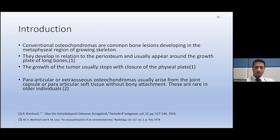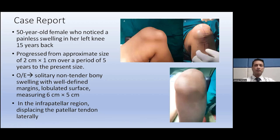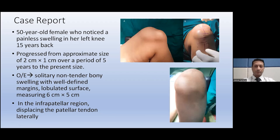I'm presenting a case of a 50-year-old lady who noticed a painless swelling in her left knee joint. She described a small swelling, about two centimeters by one centimeter — roughly the size of a pea — which she first noticed about five years back, so she must have been 45 when it developed. It increased in size over the last five years, which was her main concern, as friends and relatives suggested it could be something serious given its rapid increase in size.